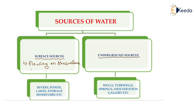The examples of surface sources are rivers, ponds, lakes, and storage reservoirs such as dams. The underground sources are those in which the water is flowing very deep inside the earth.